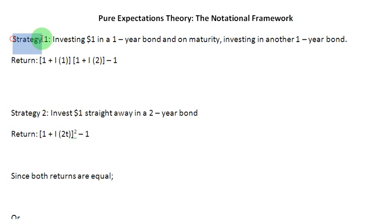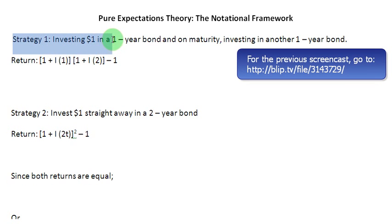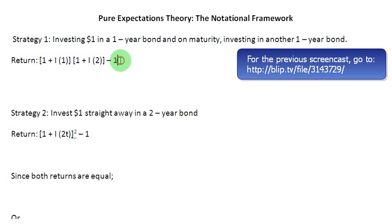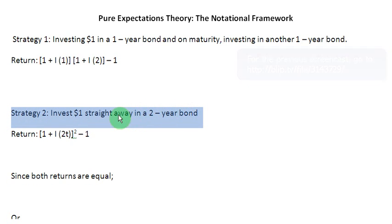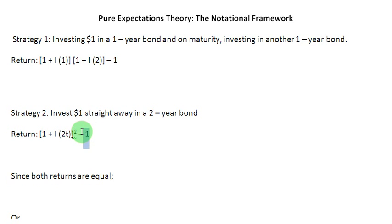Strategy number one was to invest $1 in a one-year bond. And when that matured, you reinvested the proceeds in another one-year bond. And that gave you this amount of return in notational terms. Strategy number two was to invest $1 straight away in a two-year bond. And when you did that, your return in notational terms was equal to this item here.